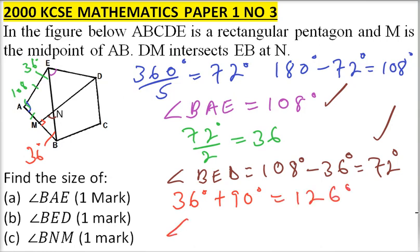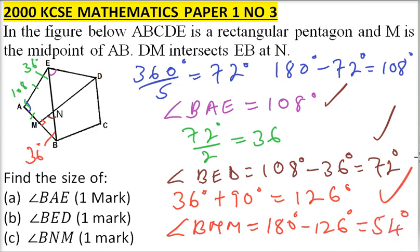So angle BNM is equal to 180 minus 126. And that should give you 54 degrees. So that is the third angle. And you get yourself three marks.